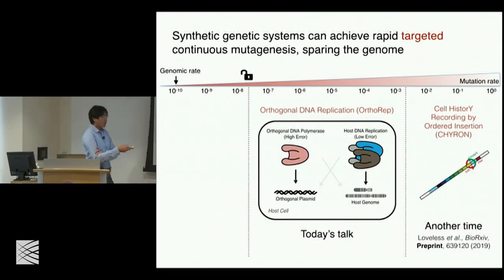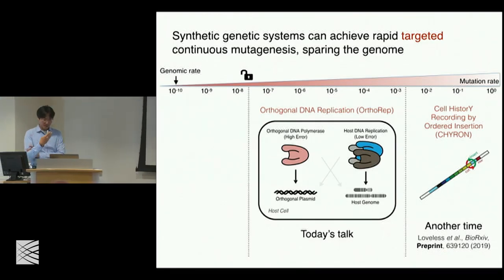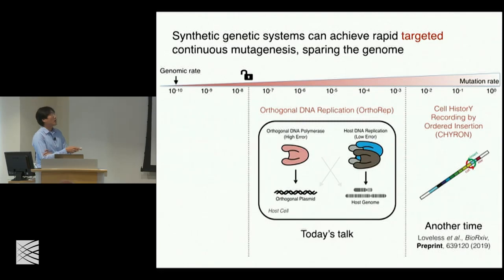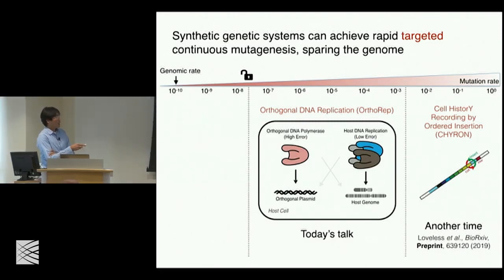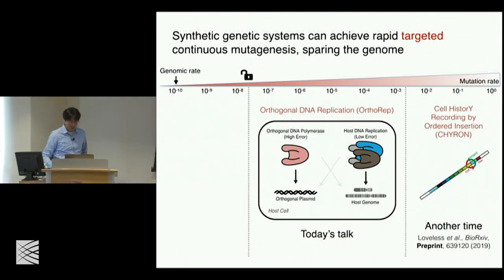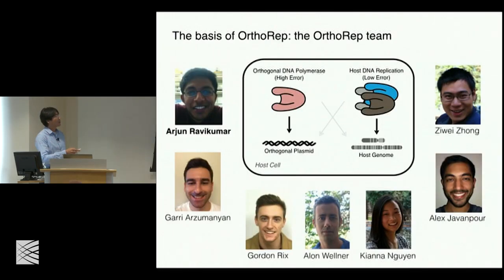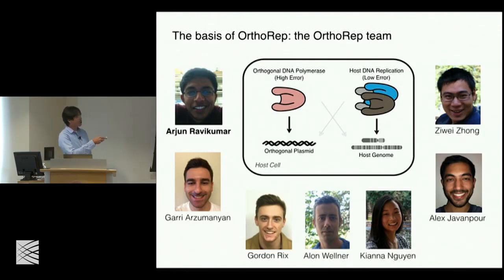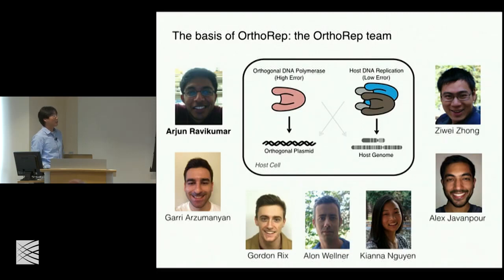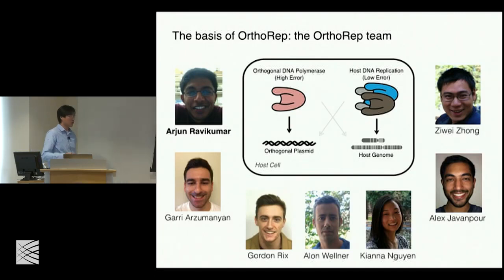The unifying theme of our lab is that we are developing specialized genetic systems capable of breaking the lock that nature has forced upon organisms to get to these regions of mutation. We released a bioarchive preprint recently on a system we're developing in mammalian cells that accumulate mutations at very high rates. What I will talk about is this orthogonal replication system — the bulk of our work.